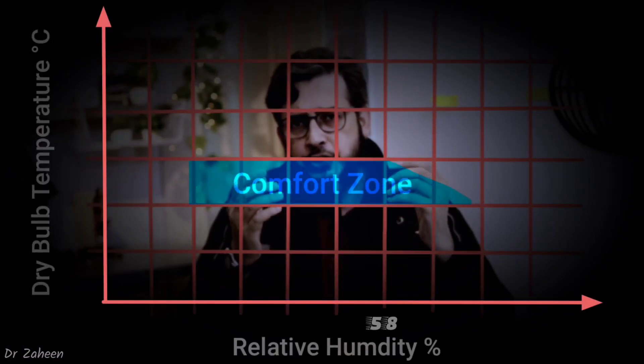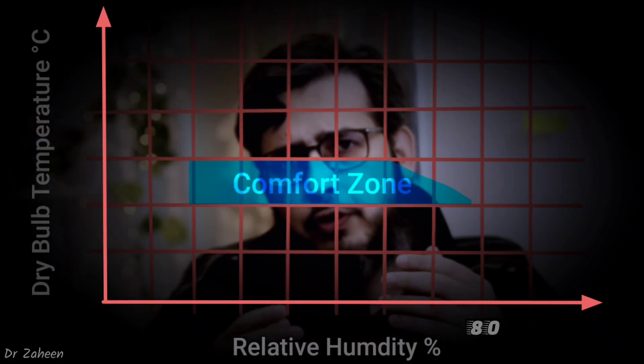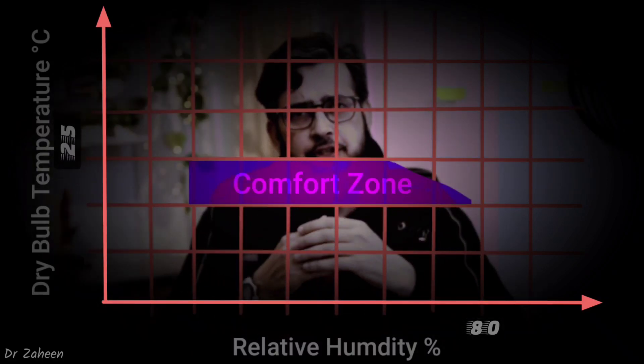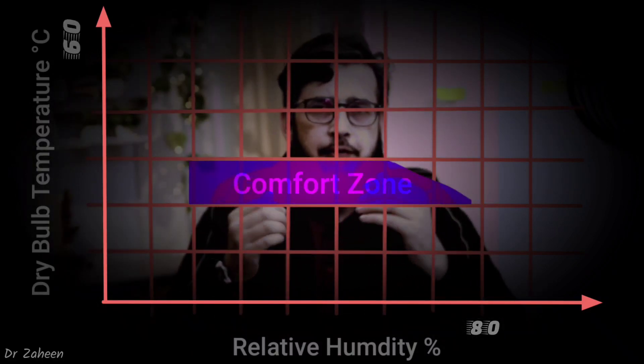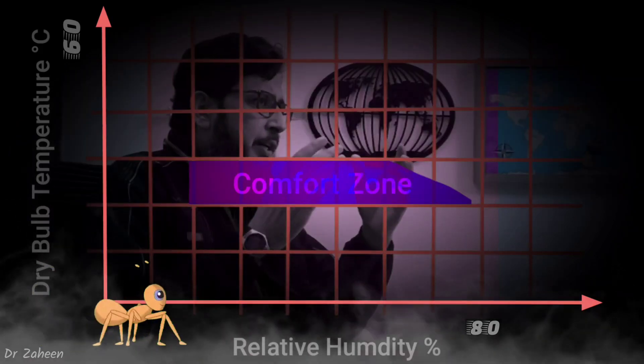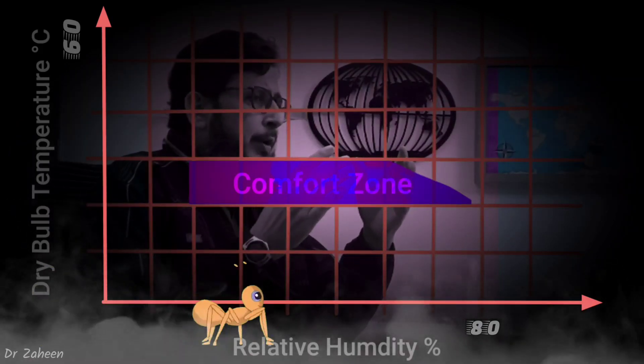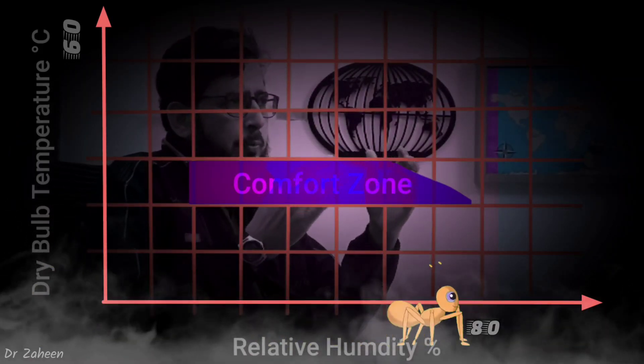Let us tally this temperature and the related humidity with the bioclimatic chart. From the point of view of temperature, this region is well within the human comfort zone, but from the perspective of relative humidity, it is out of the human comfort zone.